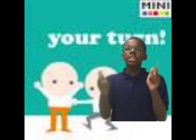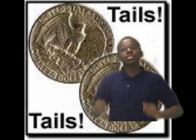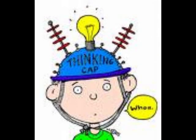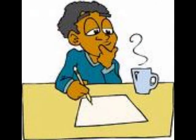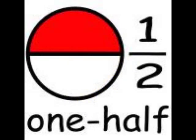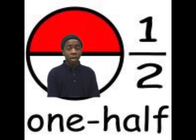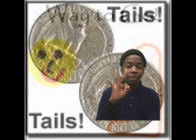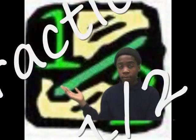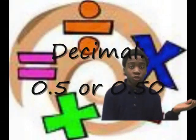So, it's your turn. What is the probability that a coin will land on tails? Correct. It's one half, five tenths, fifty hundredths, or fifty percent. A probability of one out of two can be written in three ways: as a fraction, one half; as a decimal, fifty hundredths or five tenths; and as a percent, fifty percent.